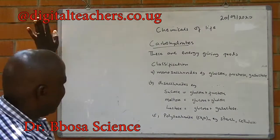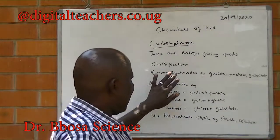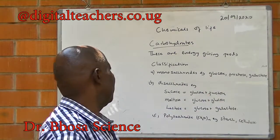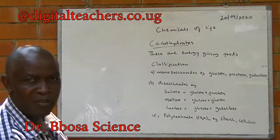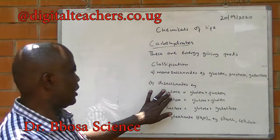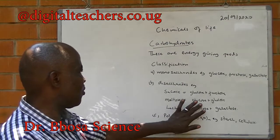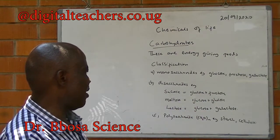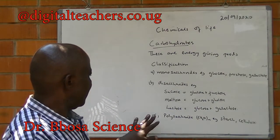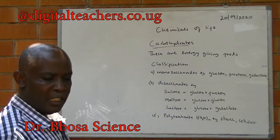Carbohydrates are energy-giving foods. Classification: we have monosaccharides — simple sugars — which include glucose, fructose, and galactose. Then we have disaccharides, made up of two sugar units. Sucrose is made up of glucose and fructose. Maltose is made up of glucose plus glucose. Lactose is made up of glucose plus galactose. Then polysaccharides — we have starch and cellulose.